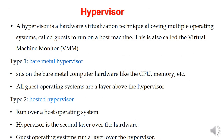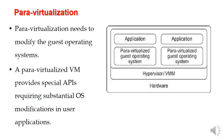Hypervisor is a hardware virtualization technique. It allows multiple operating systems — called guests — to run on a host machine. This is called VMM. We have two types of hypervisor: bare metal hypervisor and hosted hypervisor. IBM hypervisor is a bare metal hypervisor — it sits directly above the CPU and memory, with all guest operating systems above the hypervisor. A hosted hypervisor runs over the host operating system.